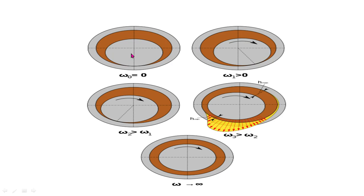As the shaft starts to rotate — in the next figure you can see the shaft is rotating in the clockwise direction — the lubricant which is in immediate contact with the shaft surface receives a force which tries to push this lubricant into the wedge-shaped clearance space. The lubricant in immediate contact with the shaft surface will also move in the clockwise direction with the shaft.